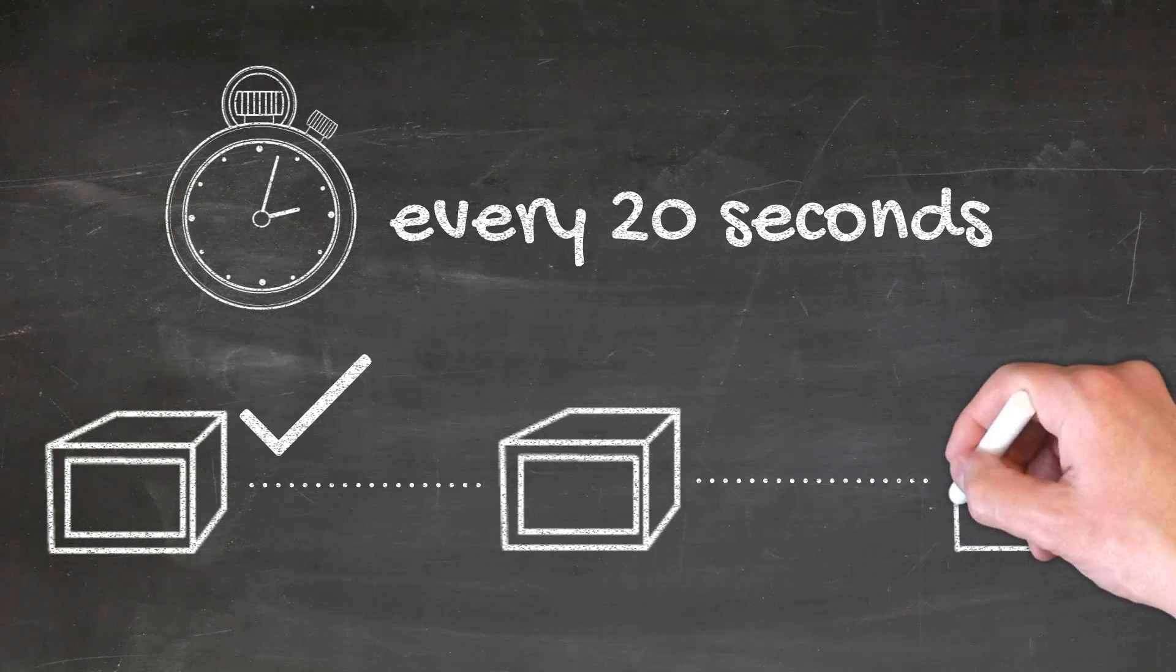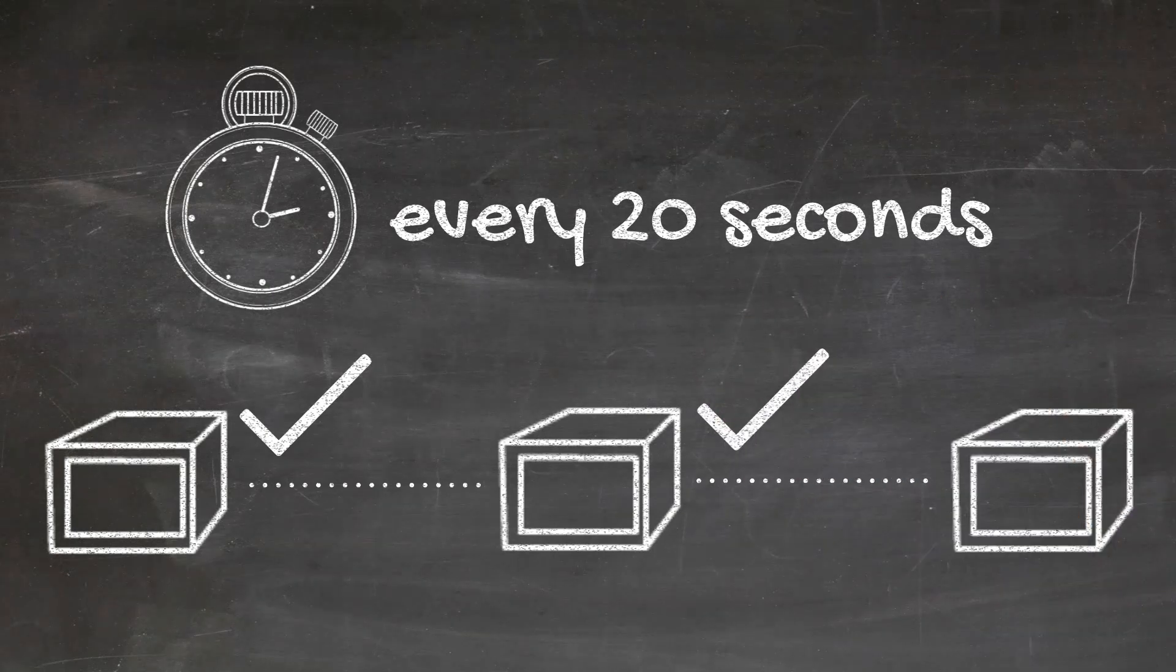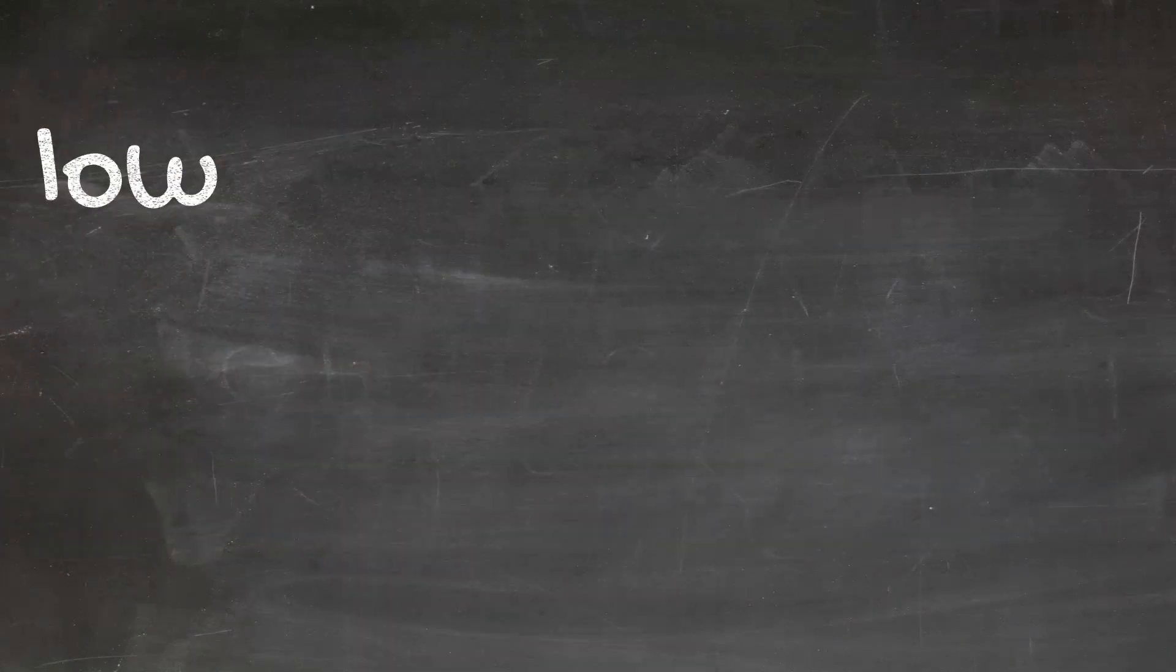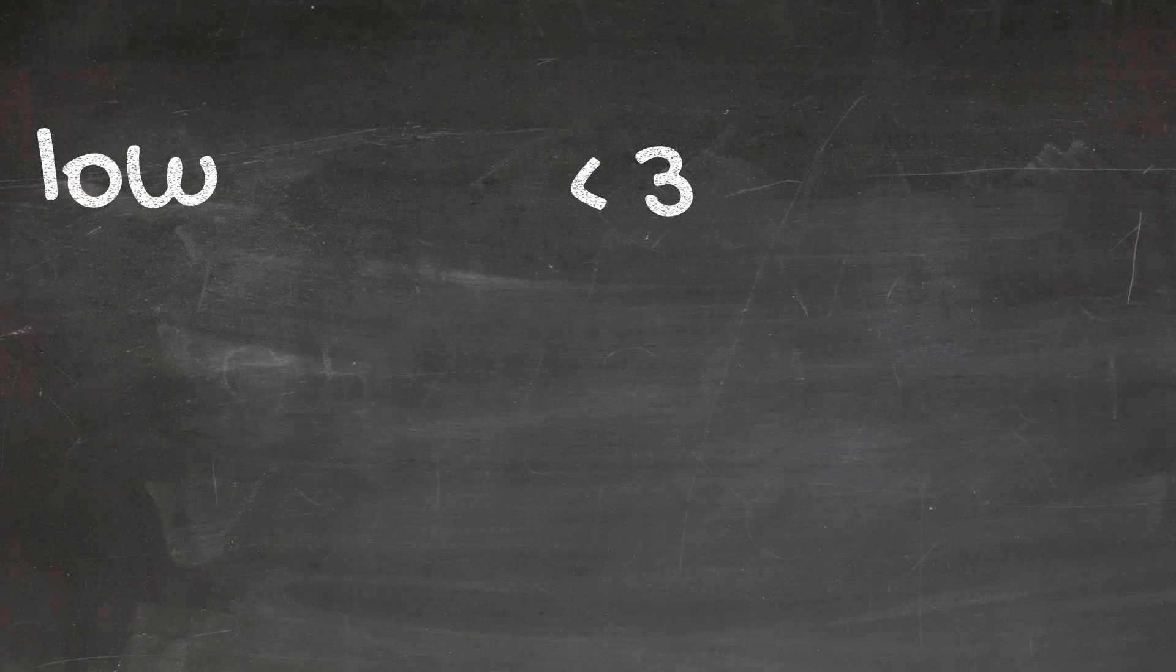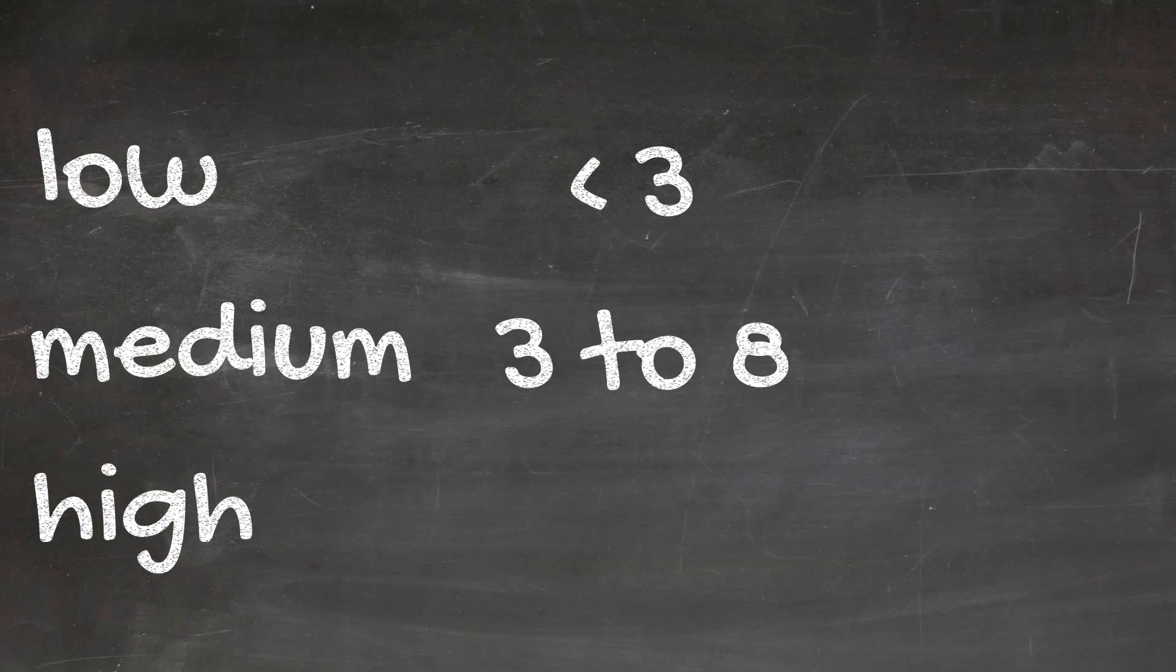So, the higher the assurance level, the more confirmations the transaction has, and the less likely it is to be reversed. Low Assurance means there are less than 3 confirmations. Medium Assurance means there are 3 to 8 confirmations. High Assurance means there are 9 or more confirmations.